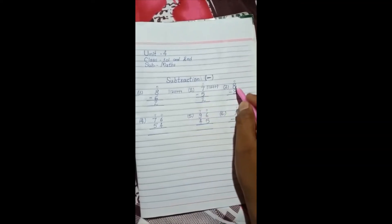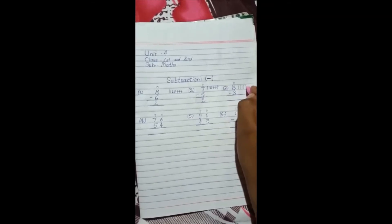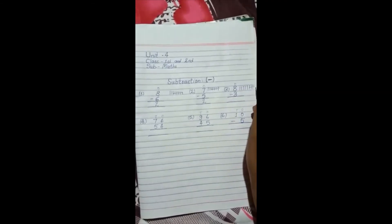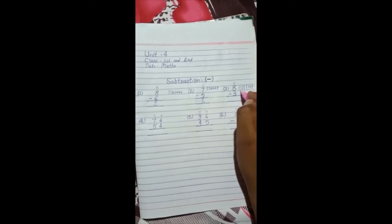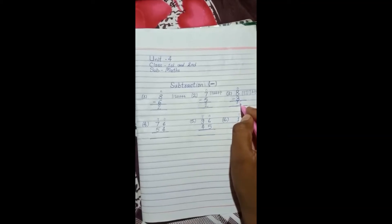Next, 8 minus 3. Draw 8 lines: 1, 2, 3, 4, 5, 6, 7, 8. Cross out 3: 1, 2, 3, 4, 5. So we write here 5. 8 minus 3 is equal to 5.